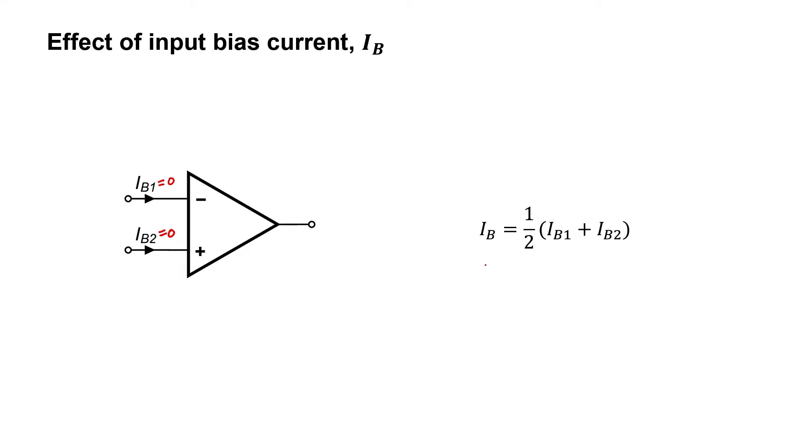In other words, I can define IB1 as just IB, or I can just say that the bias current is the average of these two currents flowing into the two pins. Ideally, again, that current should be zero, but if it's not zero, what effect is it going to have on our circuits?